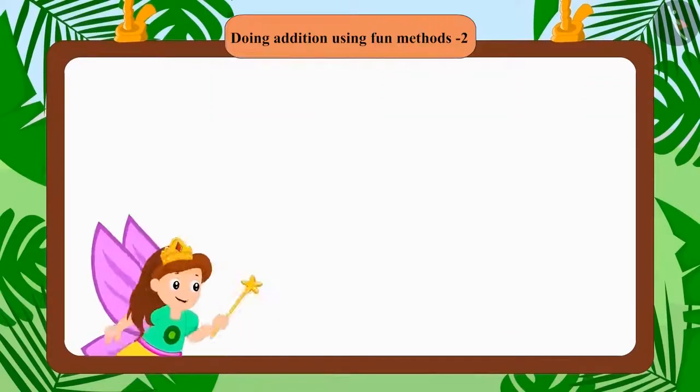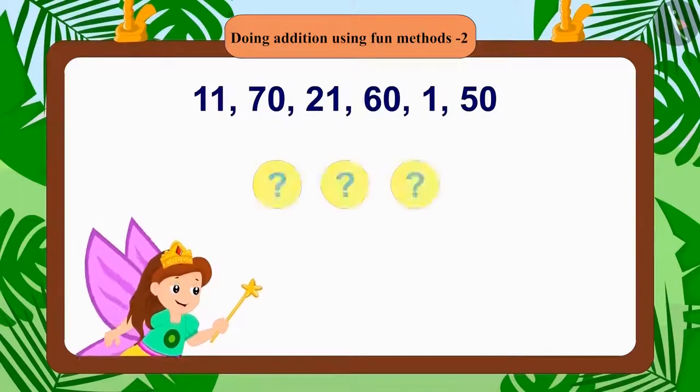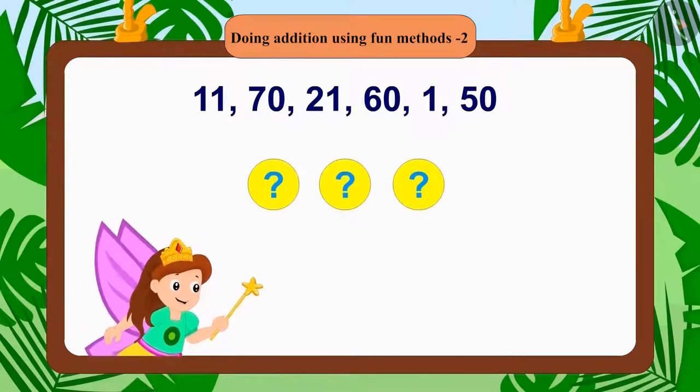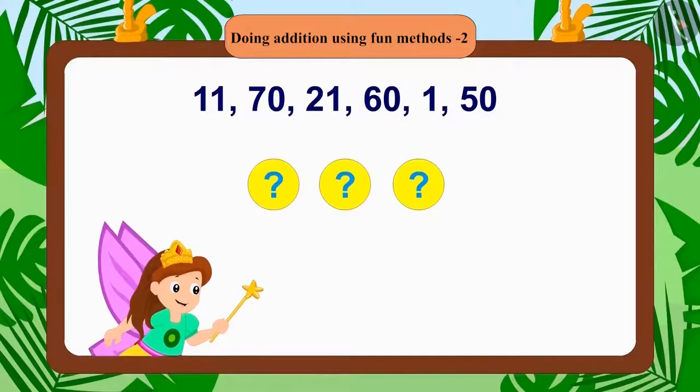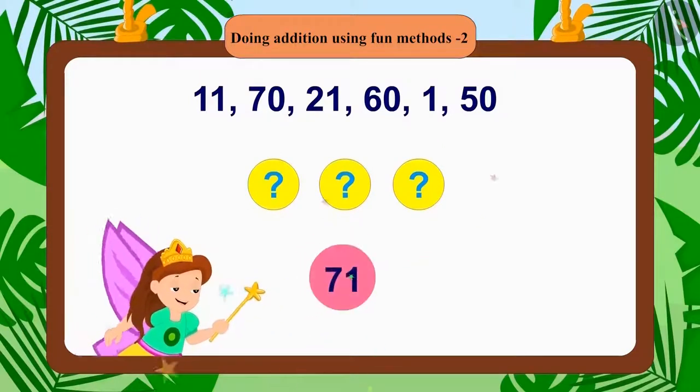The angel showed Bablu these numbers and said that he will have to make 71 by adding these numbers in three different ways. And remember, he can only take two numbers at a time.